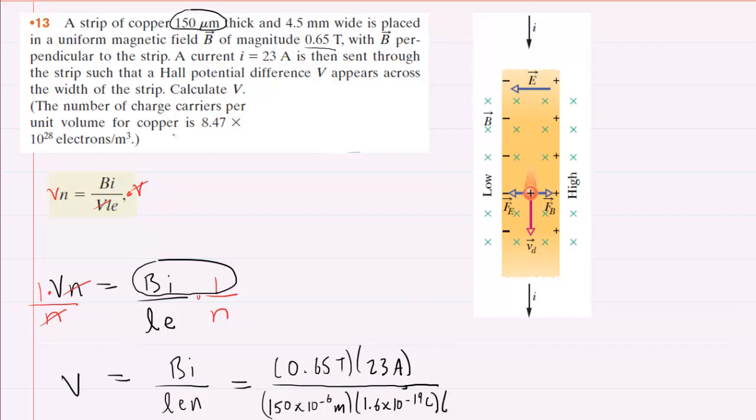And then n is this very strange number known as the charge carriers per unit volume. Luckily, they gave that to us directly in a standard unit, because it's given in terms of meters cubed. So we're going to just plug that in as 8.47 times 10 to the power of 28 electrons per meter cubed. It's usually better to just write that as meters to the negative 3.